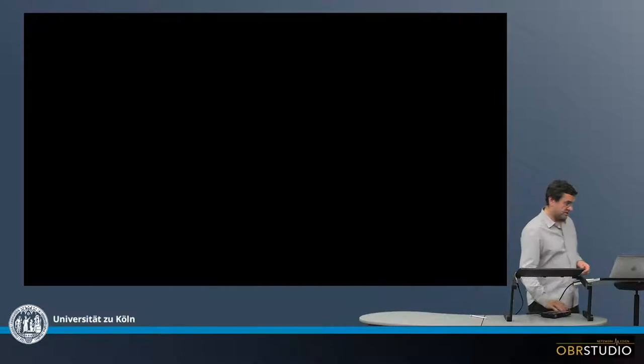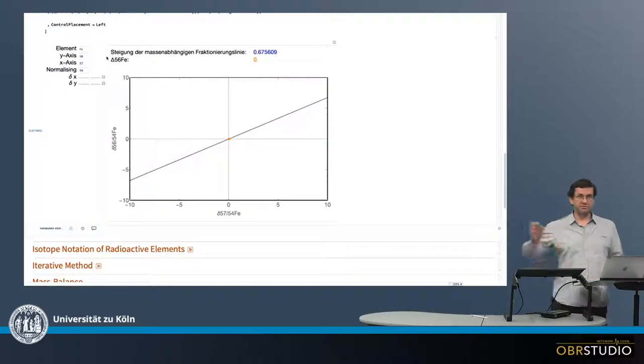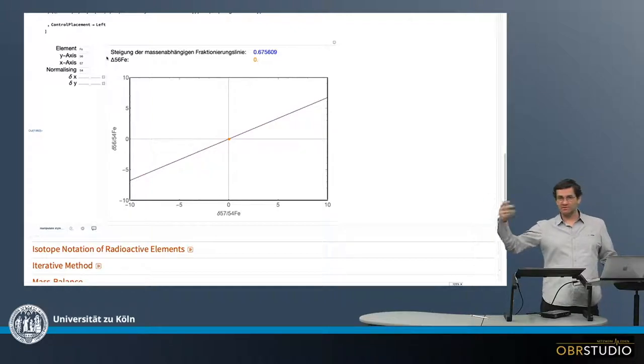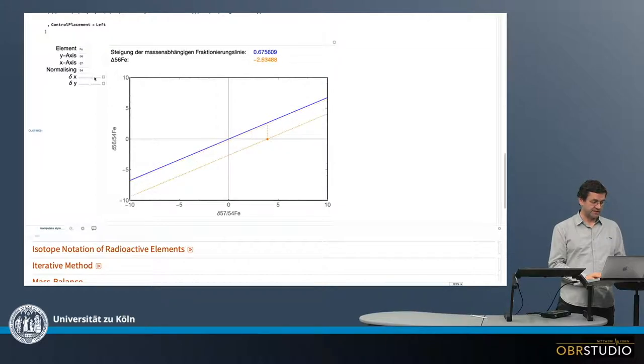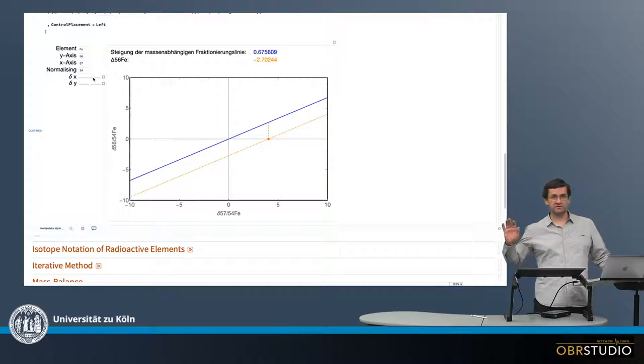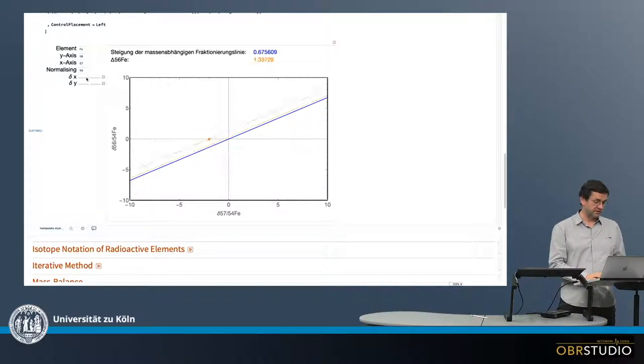I want to illustrate this more interactively. This is the same three isotope plot. Now in this case with iron, it doesn't matter. It's the same for all isotopes. I can start changing the delta x, which is the 57-54 iron. You can see how this point changes. Only the delta 57-54 is changing, and it shows how this affects the capital delta value.